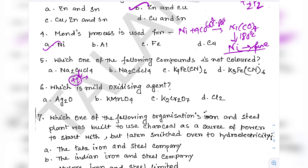In Na2CuCl4, copper is in the +2 oxidation state, making it a 3d9 system — so it will be colored. In Na2CdCl4, cadmium is in the +2 state and is a 4d10 system, so no d–d electronic transition is possible — this is colorless. Cadmium belongs to the group of zinc, cadmium, and mercury.